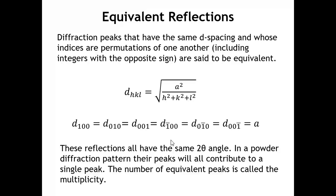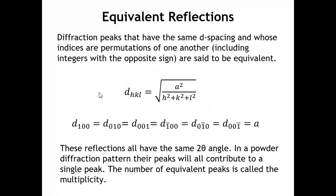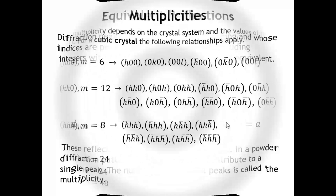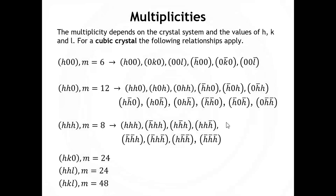We call reflections that occur at the same d-spacing, as permutations of the same set of integers with minus signs, equivalent reflections. For a cubic crystal, the d-spacing is calculated from a formula, and if one of H, K, L is ±1 and the other two are zero, they all give the same d_HKL value. So these six reflections are all equivalent, all occurring at the same place in a powder pattern — we say the 1-0-0 class of reflections has a multiplicity of six. But for the 1-1-0, the multiplicity becomes 12.